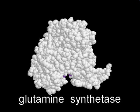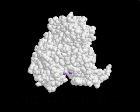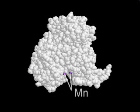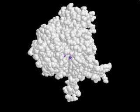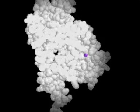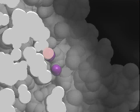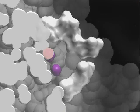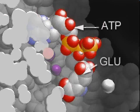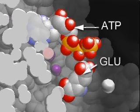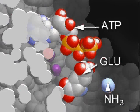This entire reaction takes place at the active site of glutamine synthetase. In the active site of the enzyme are two manganese atoms, which aid in catalyzing the reaction. Two of the substrates, ATP and glutamate, bind to the active site of the enzyme. The third substrate, ammonia, is available in the cell.